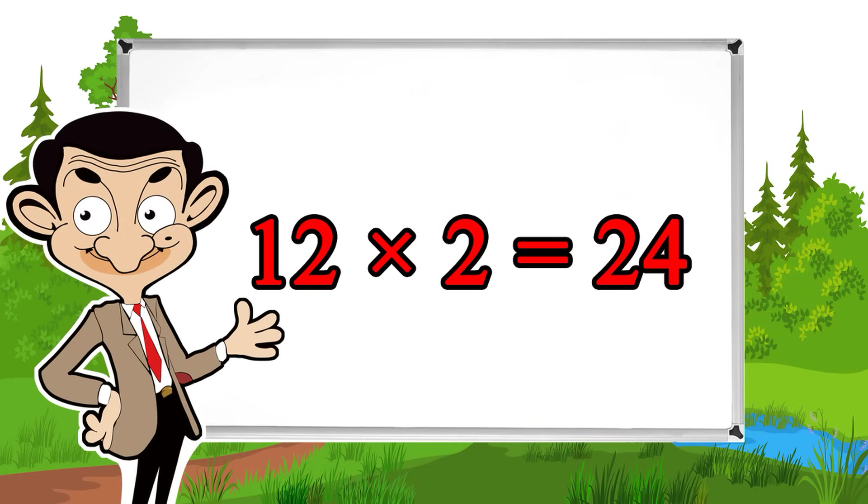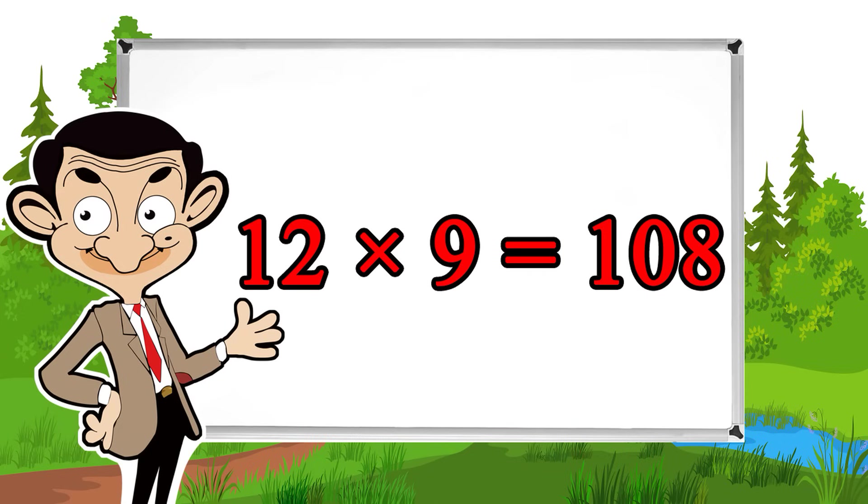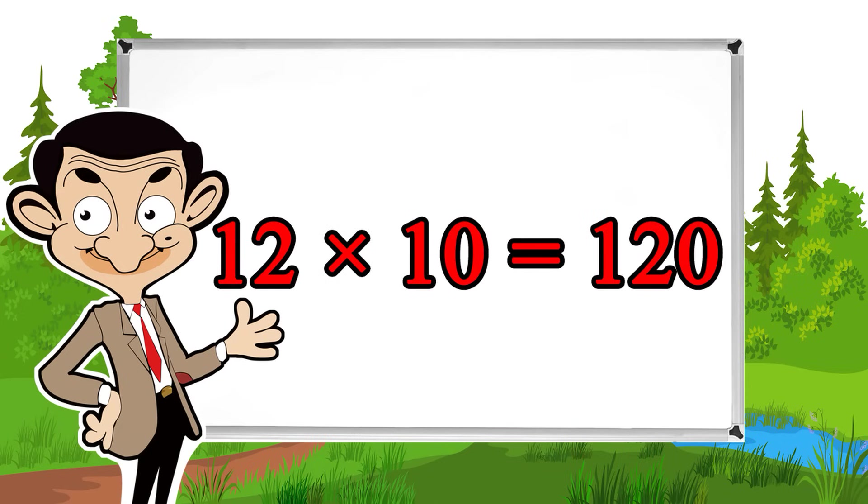12 times 1 equals 12, 12 times 2 equals 24, 12 times 3 equals 36, 12 times 4 equals 48, 12 times 5 equals 60, 12 times 6 equals 72, 12 times 7 equals 84, 12 times 8 equals 96, 12 times 9 equals 108, 12 times 10 equals 120.